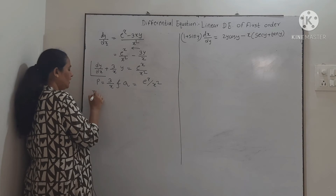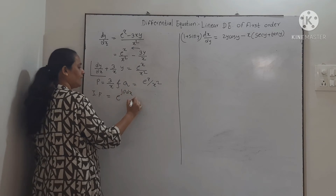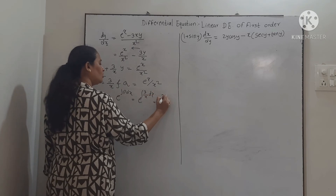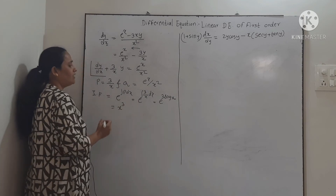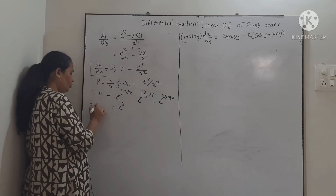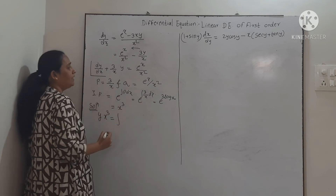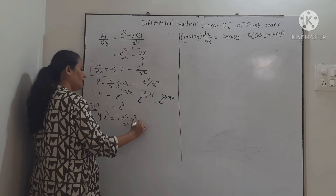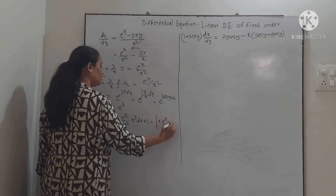The integrating factor is e^(∫P dx) = e^(∫3/x dx) = e^(3 log x). By the rules of logarithm, the integrating factor is x³. The solution, since this is linear in y, is: x³ · y = ∫(e^x/x²) · x³ dx + c = ∫x · e^x dx + c.